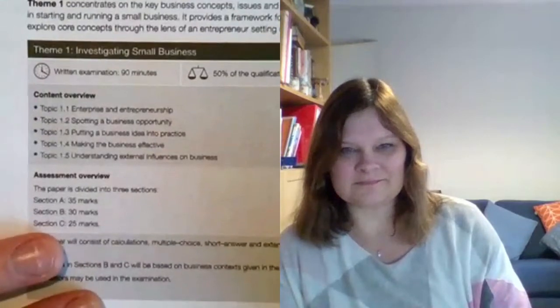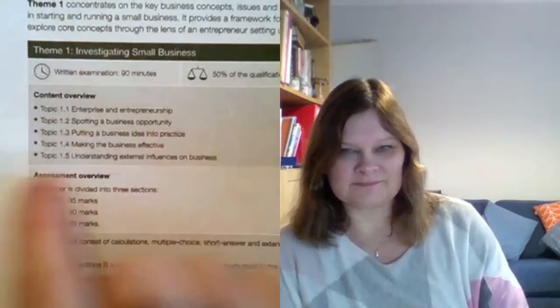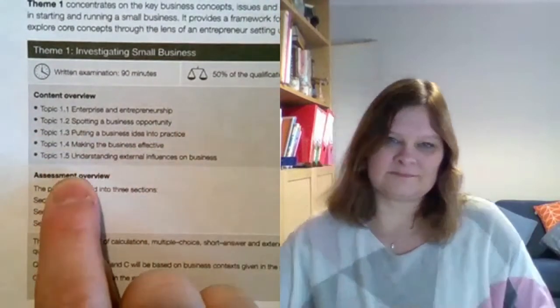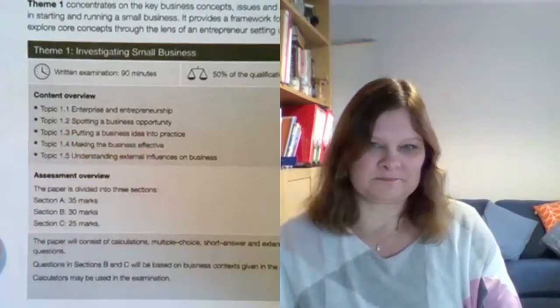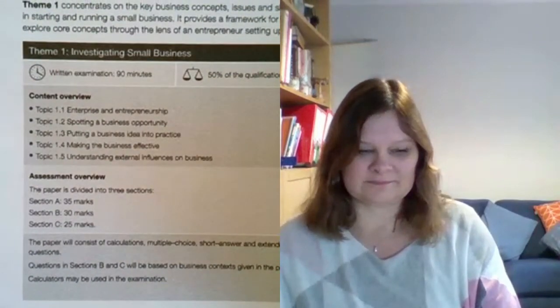The course is split into two main parts. Theme 1 is investigating small businesses, where we look at entrepreneurs, spotting opportunities, putting them into practice and making them effective. We explore where you get the idea from, where you get the money to start — because most businesses don't use their own money. Then we look at how you take a small idea, like selling lemonade outside school, and scale it up to running your own business.